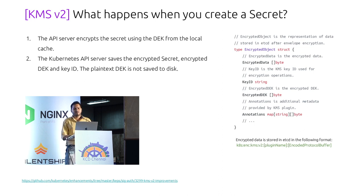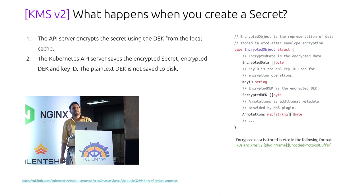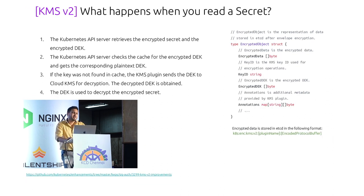There is also a key ID field in V2, which changes only when the KMS master key is rotated. When the Kube API server gets a signal that the master key has changed, it re-encrypts everything. When reading a secret with KMS V2, if the plain-text DEK is already in the cache, no plugin call is needed — it directly decrypts from etcd and returns the data to the user. If there is a key ID change, it will perform re-encryption.